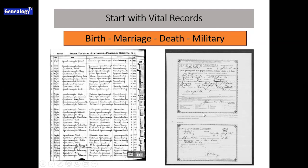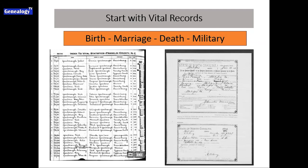Here are marriage records, both from North Carolina. On marriage records, you will find the parents' names for the bride and groom. A lot of times that marriage record is taking you back a generation, providing names you did not know. This one is from Halifax County, North Carolina, and it's showing the parents' names for the bride and groom.